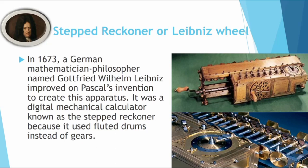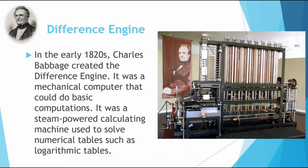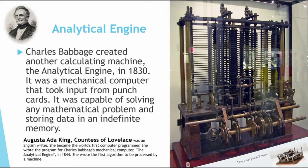In the early 1820s, Charles Babbage created the Difference Engine, a mechanical computer that could do basic computation. It was a steam-powered calculating machine used to solve numerous tables such as logarithmic tables. Charles Babbage then created another calculating machine — the Analytic Engine in 1830, a mechanical computer that took input from punch cards. It was capable of solving any mathematical problem and storing data in an indefinite memory.